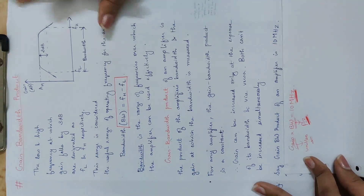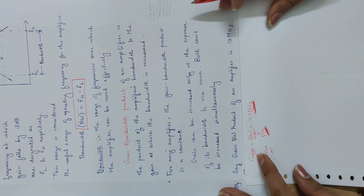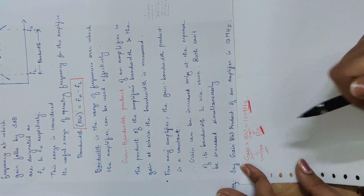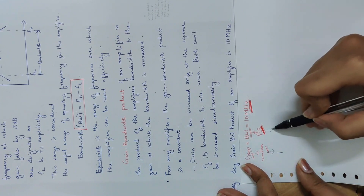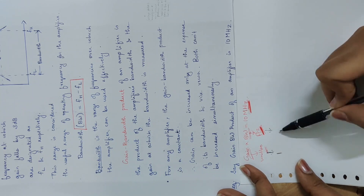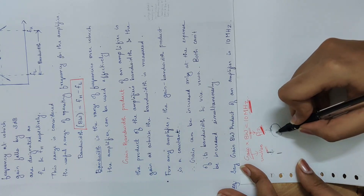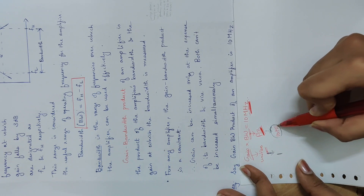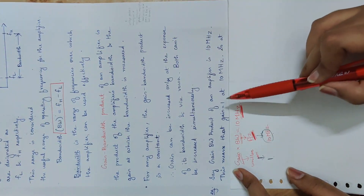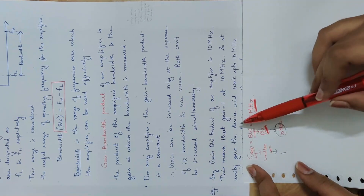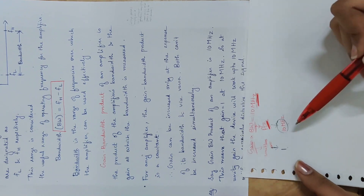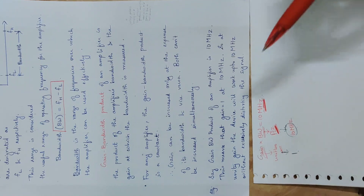If the gain bandwidth product of an amplifier is 10 MHz, this means that at unity gain (gain = 1), the device will work up to 10 MHz without excessively distorting the signal.